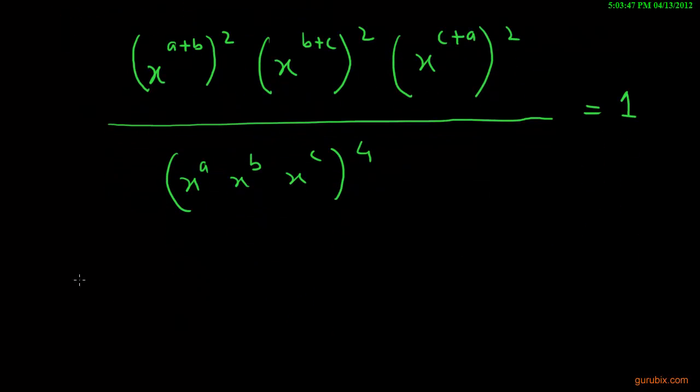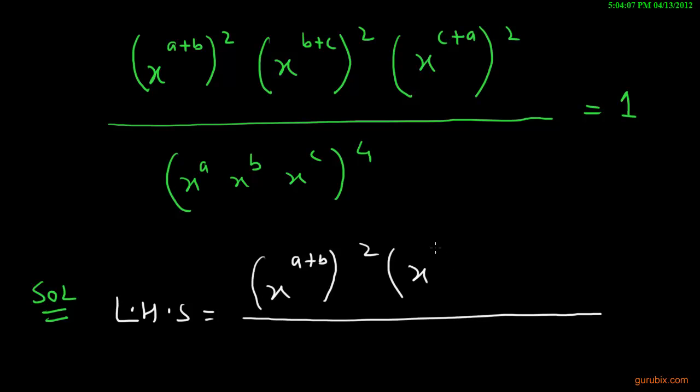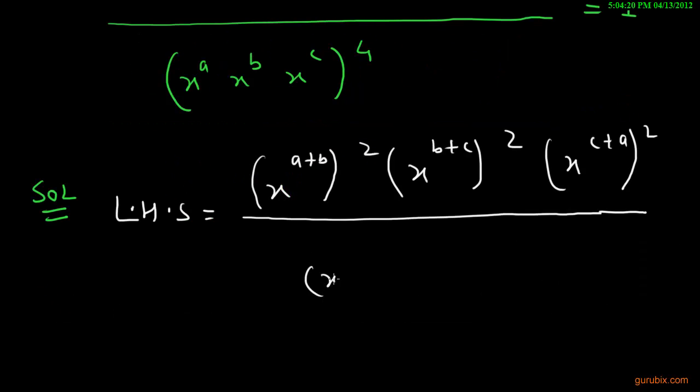We shall start with the left-hand side of the question. Left-hand side is given: x raise to a plus b whole square, here is x raise to b plus c whole square, and here is x raise to c plus a square.